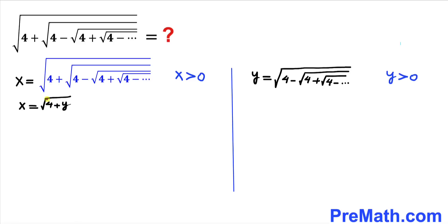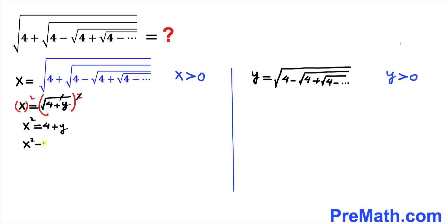Let's undo the square root by squaring both sides, so x squared equals 4 plus y. Moving y to the left-hand side gives us x squared minus y equals 4. Let's call this equation number 1.